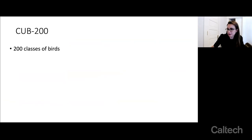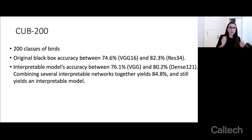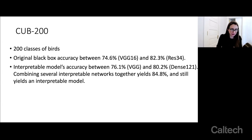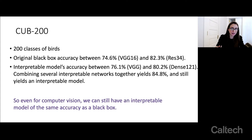We've been working with the CUB-200 dataset, a benchmark dataset in computer vision with 200 classes of birds. We ran a whole bunch of different neural networks on this dataset and got black box accuracy in a certain range. When we inserted the prototype layer into all these networks and retrained them, the accuracy was still in that same range. When we stacked these interpretable models — proto-networks — we actually got a neural network that was even more accurate than the baselines and it was still interpretable. So even for computer vision, we can still have an interpretable model of the same accuracy as a black box.